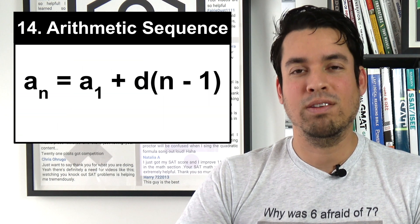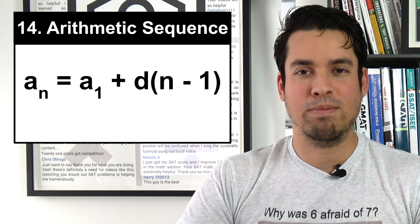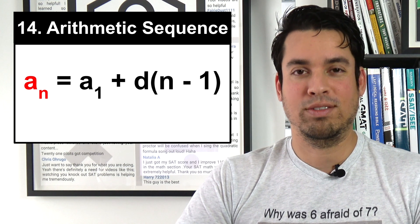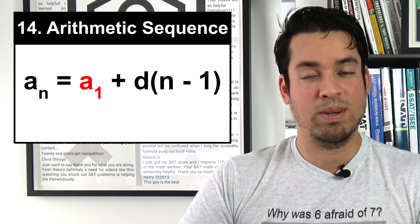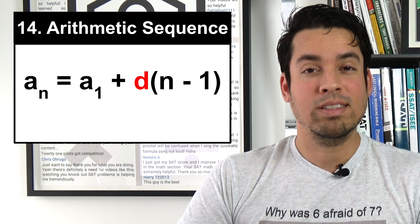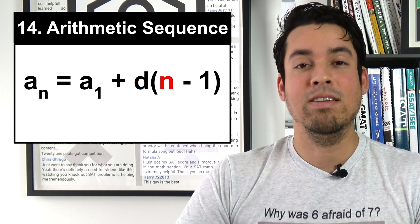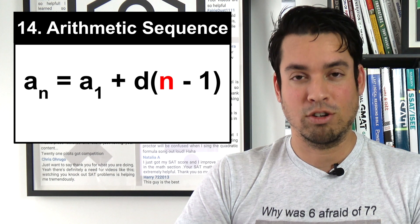Next on the list is the formula to find the nth term of an arithmetic sequence. aₙ represents the nth term you're trying to find, a₁ represents the first term in the sequence, d represents the common difference in the sequence, and of course n represents the number of the term in the sequence that you're trying to find.